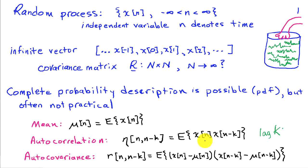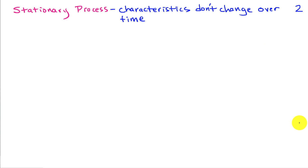This describes how the mean changes over the random process, and also how correlated different samples of this signal are in time. There are a lot of parameters here, even just looking at the first and second order statistics, because the mean is a function of n and could be infinitely long. Similarly, the autocorrelation is a function of both n and k, as is the autocovariance. So it's conventional to consider a simplification that occurs when we have a stationary process — one whose characteristics don't change over time.